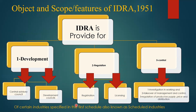Now the most important question: what is the main objective, scope, and features of the Industrial Development and Regulatory Act 1951? This act basically provides for the development, regulation, and control of certain industries — specifically industries specified in the first schedule, also known as scheduled industries. Those industries explained in the first schedule are subject to regulation and control under this act.